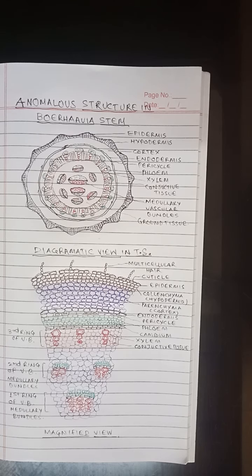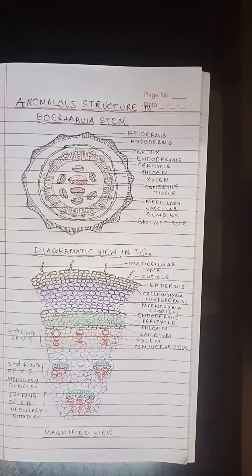Epidermis: it is single layered with cuticle. The cells are filled with violet sap. A large number of multicellular hairs arise from the epidermis. The epidermis also has stomata.